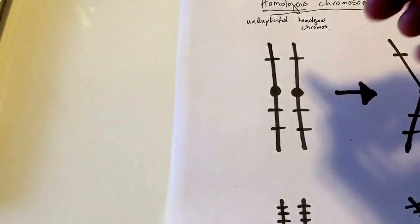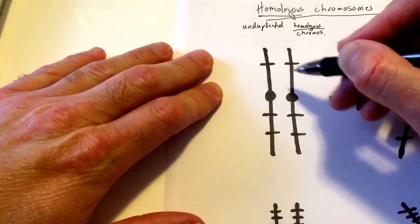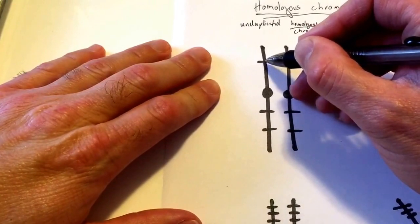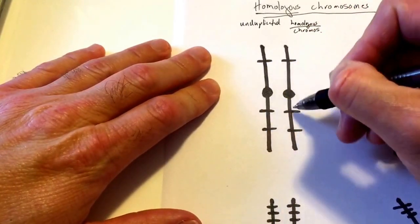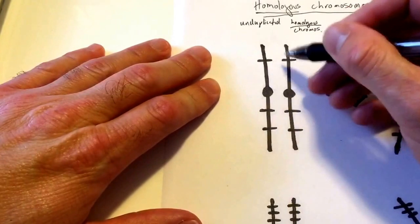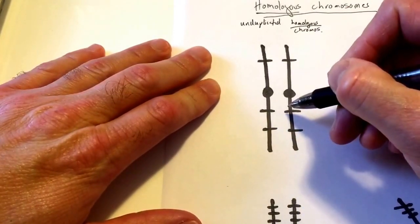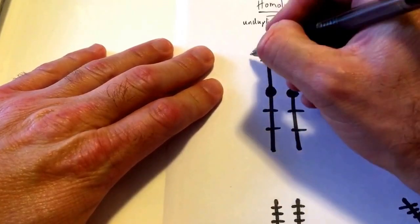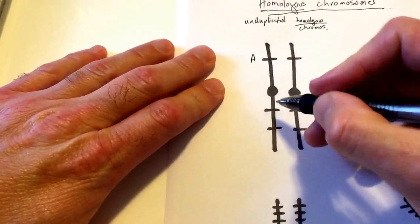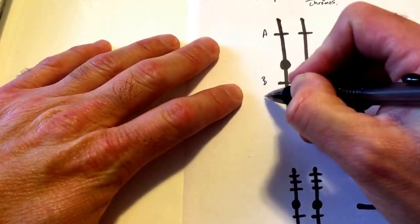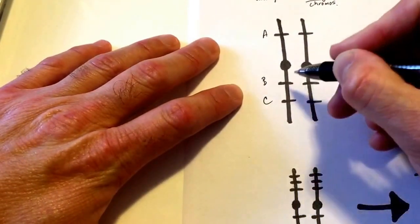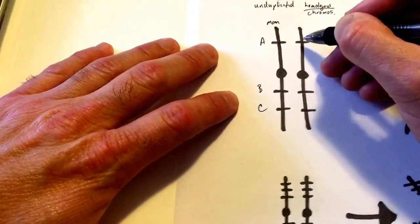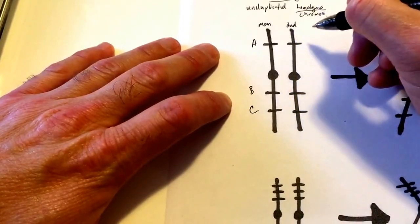The word homologous means that they are the same — they contain the same genes. I've indicated the locations of different genes all along the lengths of these homologous chromosomes. This location of this gene right here, this gene locus, we'll say is the A gene locus. Here on the other arm is the B and the C. Let's say that this is the chromosome which we inherited from mom, and this other chromosome would be the chromosome which we inherited from dad.